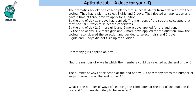At the end of Day 1, 6 boys had applied and we do not know the number of girls. Let us say there are n girls on Day 1. The number of ways of selection is 1800, so that will be nC3 into 6C2, which equals 1800.